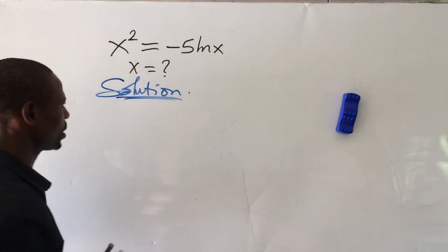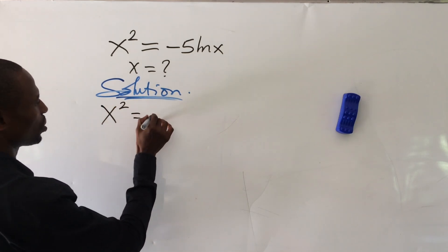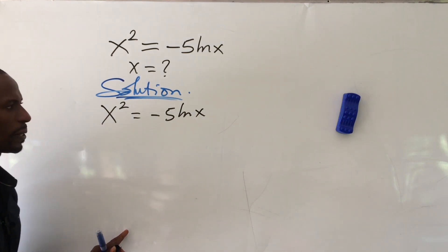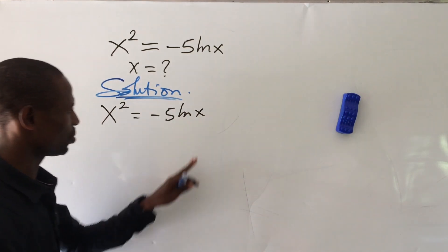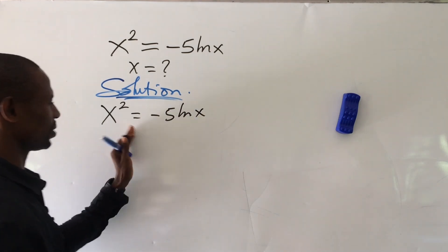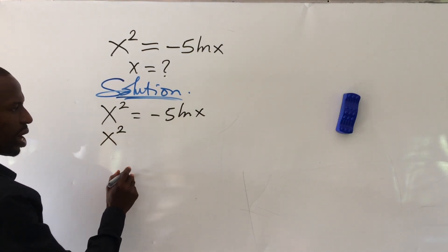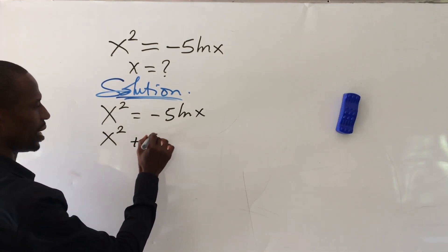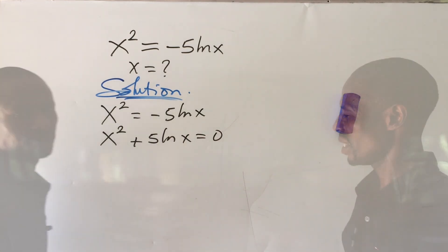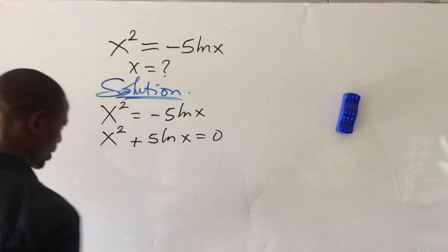So the question: x to the power of 2 equal to minus 5 ln of x. The first thing we do is move the term on the right-hand side to the left-hand side, so we have x squared plus 5 ln of x equal to 0.